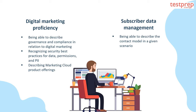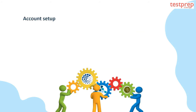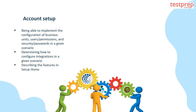Number two, subscriber data management. It contains: first, being able to describe the contact model in a given scenario; second, evaluating data quality in a given scenario; third, explaining preference and profile center concepts. Number three, account setup. It contains: first, being able to implement the configuration of business units, users, permissions, and security or passwords in a given scenario; second, determining how to configure integrations in a given scenario; third, describing the features in setup home.